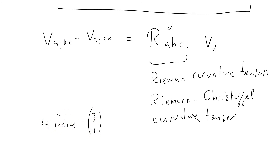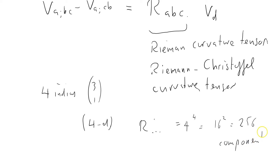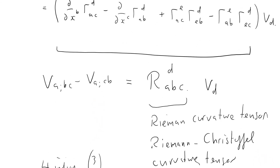You can see it's got four indices — it's a (3,1) tensor, which is a complicated beast to deal with. In four-dimensional spacetime, you might think it has 4^4 = 256 components. This isn't the case, because there are a whole bunch of symmetry relations in the Riemann–Christoffel curvature tensor which we can take advantage of.